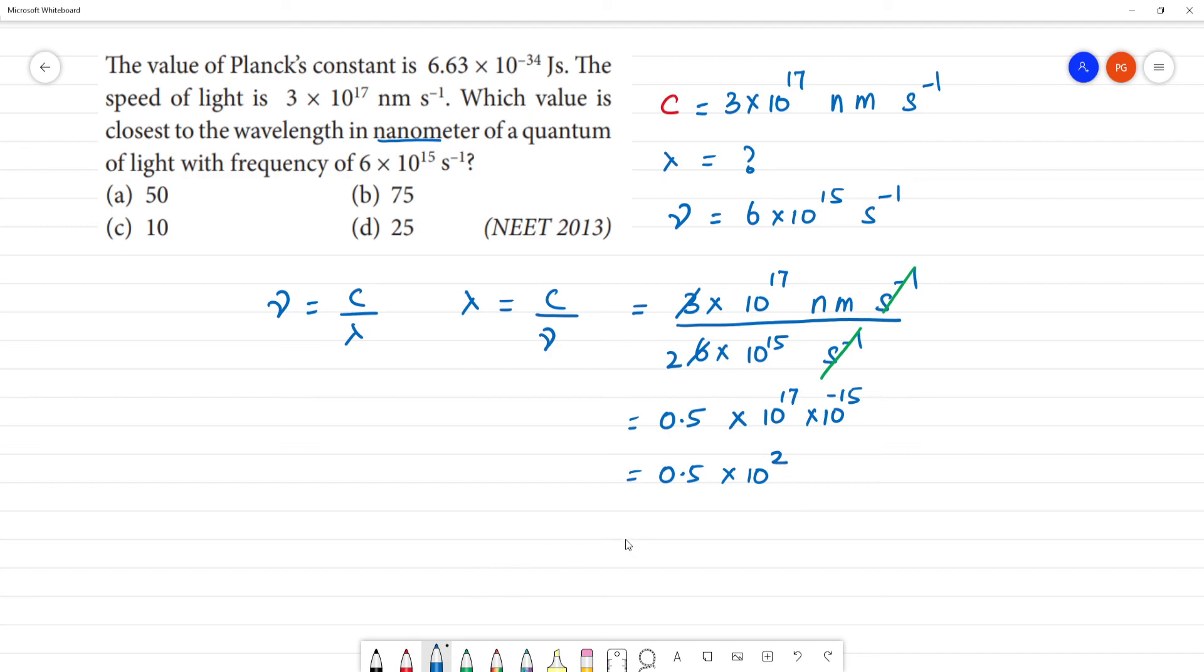10 square, 17 minus 15 is 2. Then we can say here one digit, here one digit, then we can say 50, 50 nanometer. So the answer is 50 nanometer.